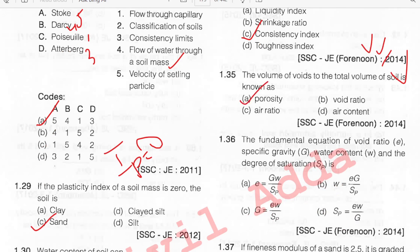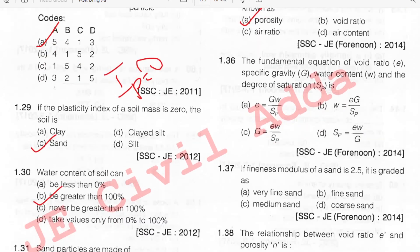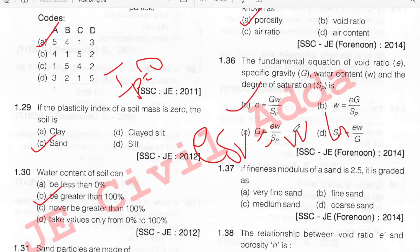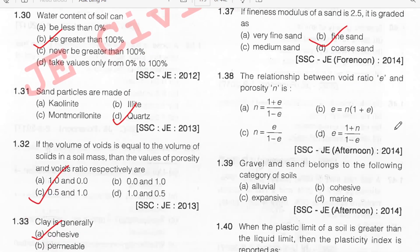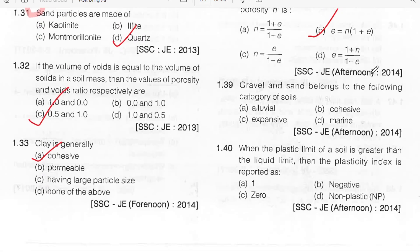The fundamental equation relating voids ratio, specific gravity, water content, and degree of saturation: E · SR = W · GS.